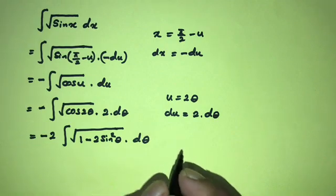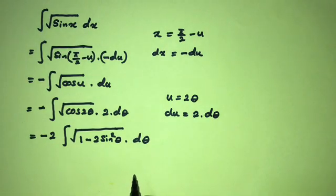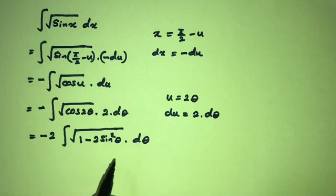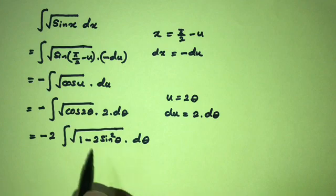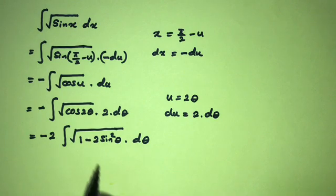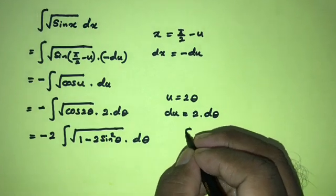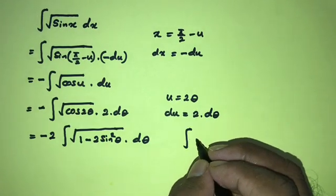We know cosine of 2 theta equals 1 minus 2 sine squared theta, d-theta. In a previous video we evaluated the integral of cosine of theta — I will add the link in the description. So we use the elliptic integral here as well.